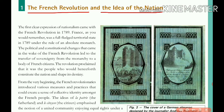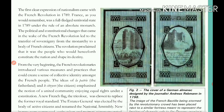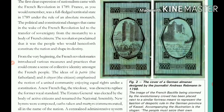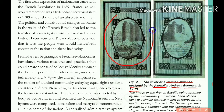Here is a picture — a German Almanac. An almanac is a diary, an annual calendar containing astronomical data. You can see the cover page. This is by a journalist named Andreas Rebmann in 1798. You can see on this first cover a picture from the last year of the French Revolution.